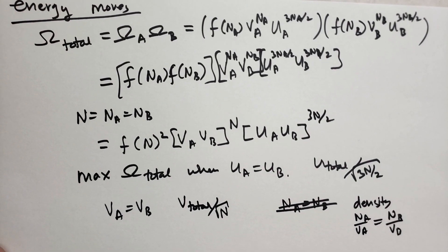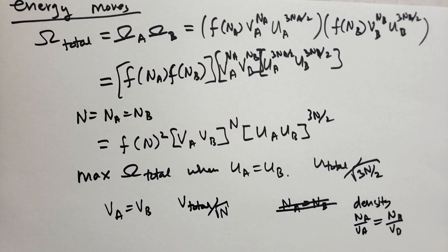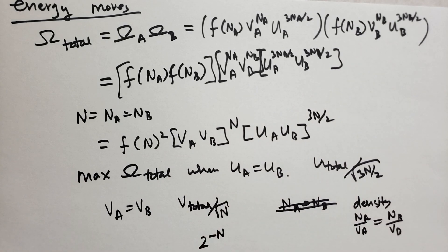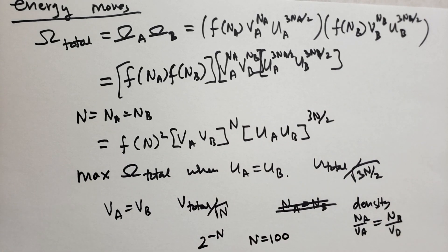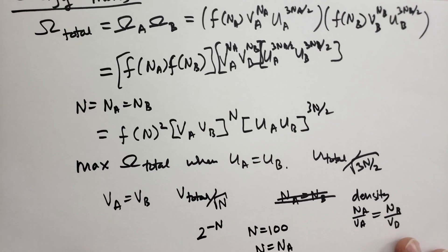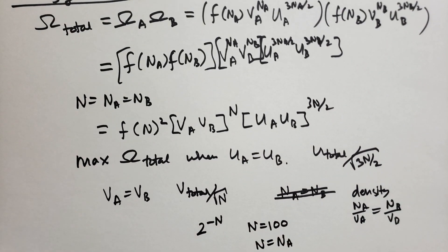Suppose we wanted to figure out the likelihood of all the particles ending up on one half of a chamber. We'd find that this gives a 2^(−N) probability compared to the peak. Even when N is 100, you would check the state trillions of times a second for the age of the universe and perhaps see this occur only once. When N is closer to Avogadro's number, it's simply ridiculous to ever think of this happening.